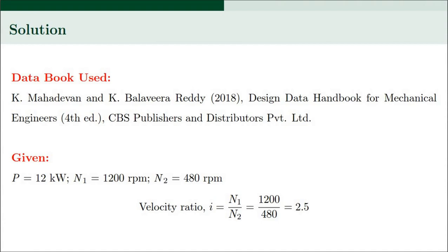From the values of N1 and N2 we can determine the velocity ratio i as N1 divided by N2, that is 1200 divided by 480, which equals 2.5.